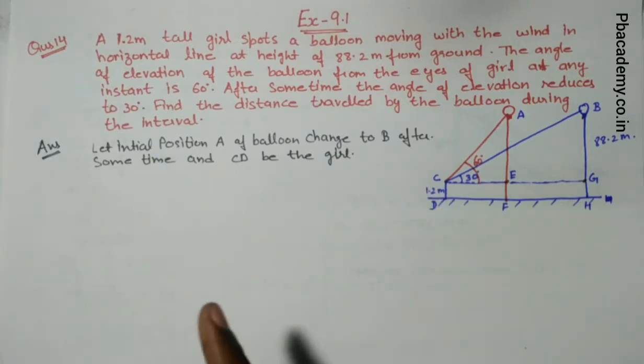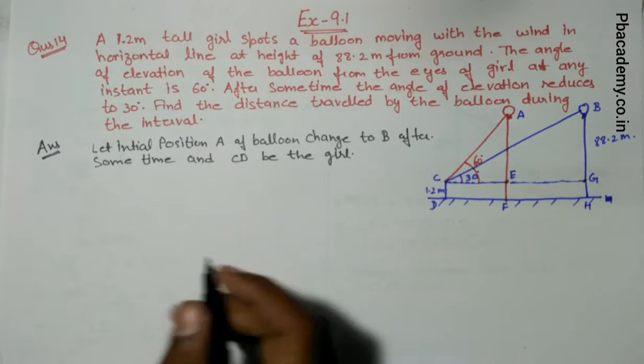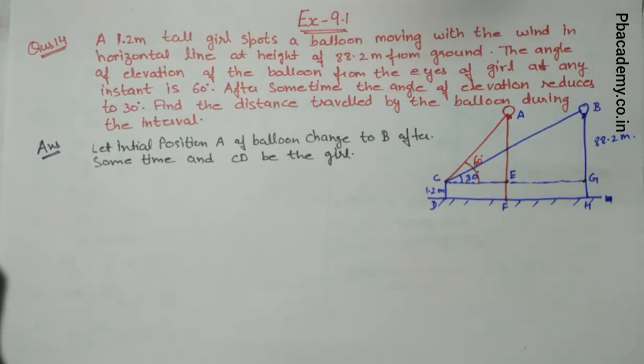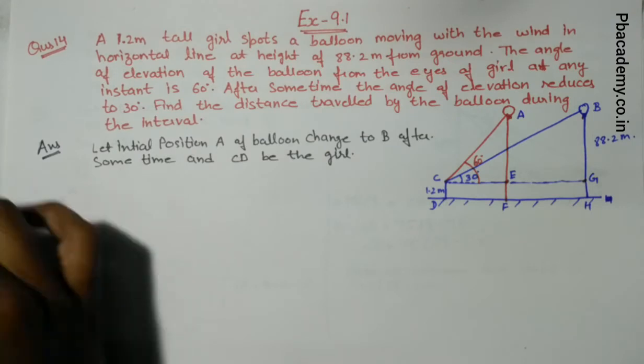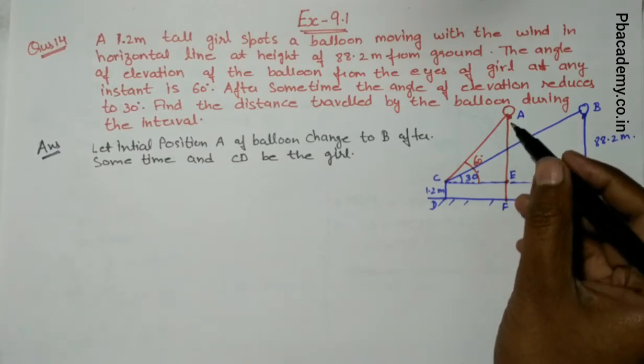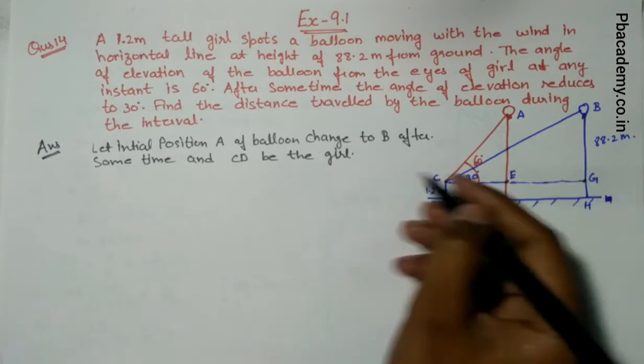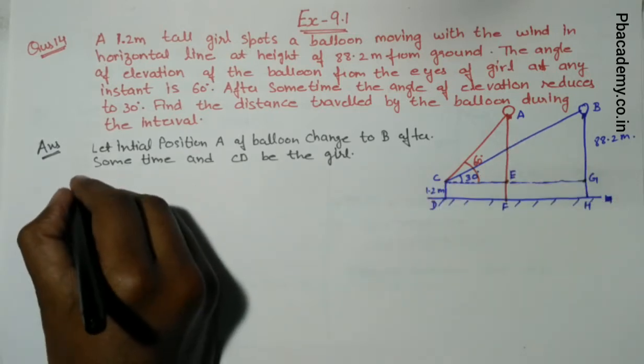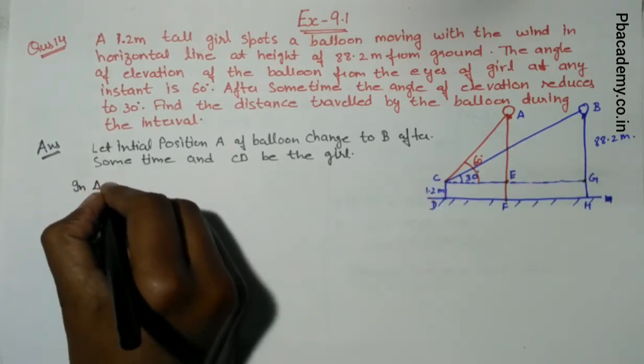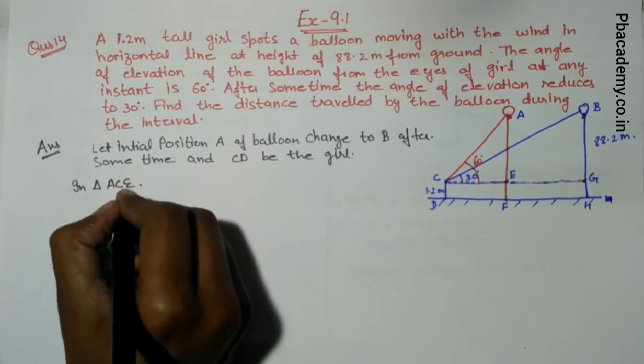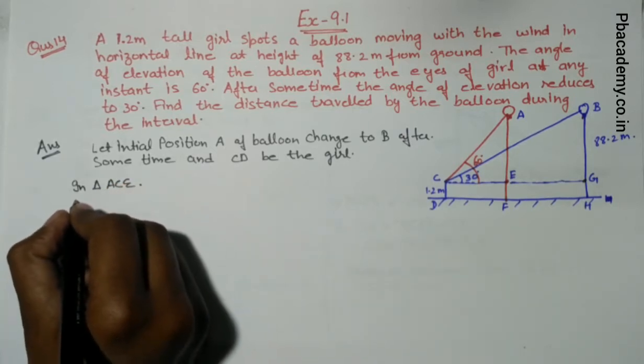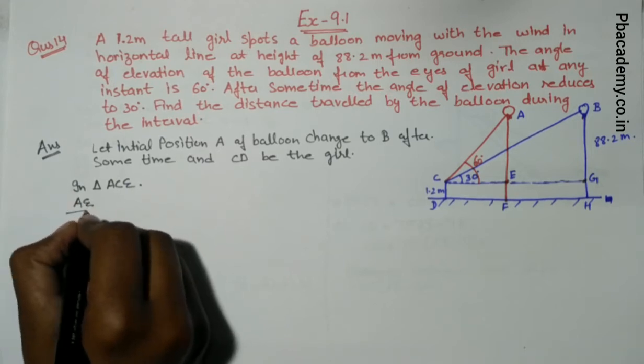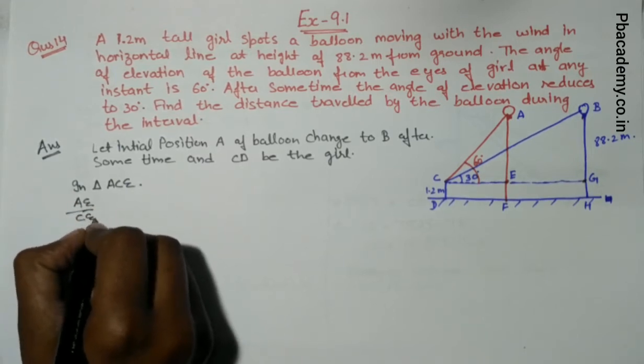First of all we will take the smaller triangle and try to find it out. In triangle ACE, we make the ratio AE upon CE. AE is our perpendicular, CE is our base. P upon B is tan, and the angle is 60 degrees, so tan 60 degrees.